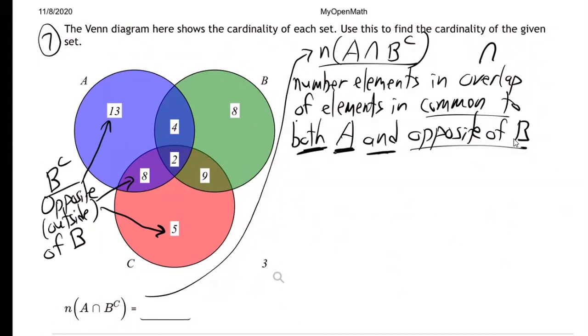And then here's circle A. So if this is circle A, what's in common to A and the opposite of B? 13, 8. Exactly. Everybody seeing that? It's the 13 and the 8.